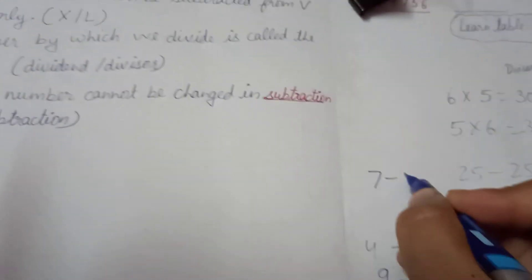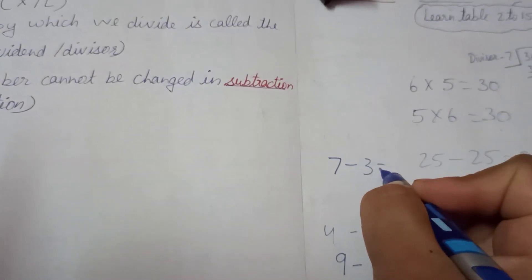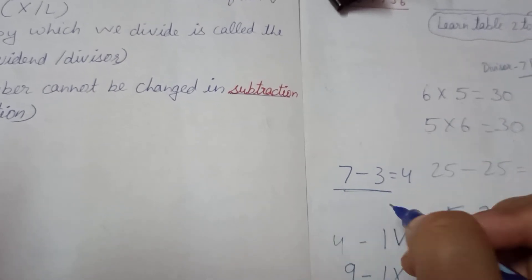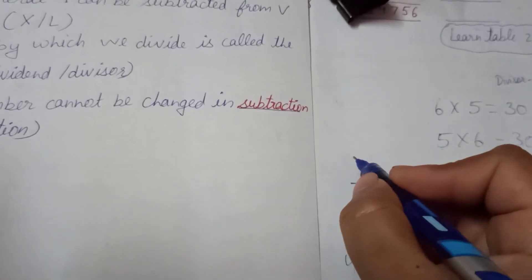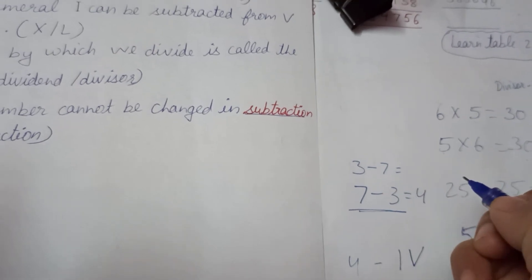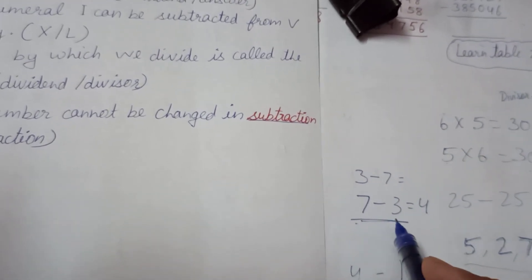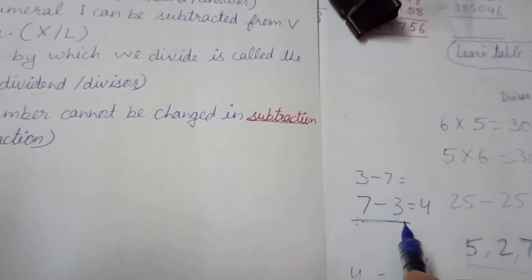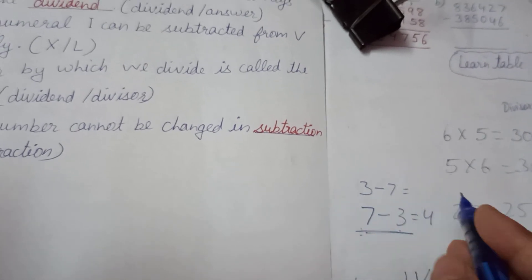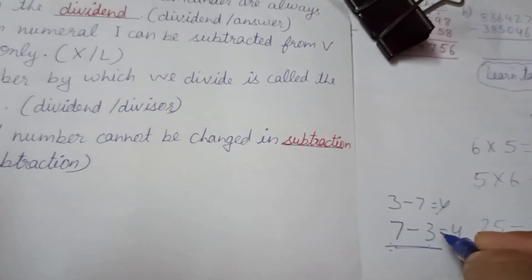In subtraction, we cannot change the order of numbers. For example, 7 minus 3 equals 4, but we cannot write 3 minus 7 in its place. The order of subtraction cannot be changed.